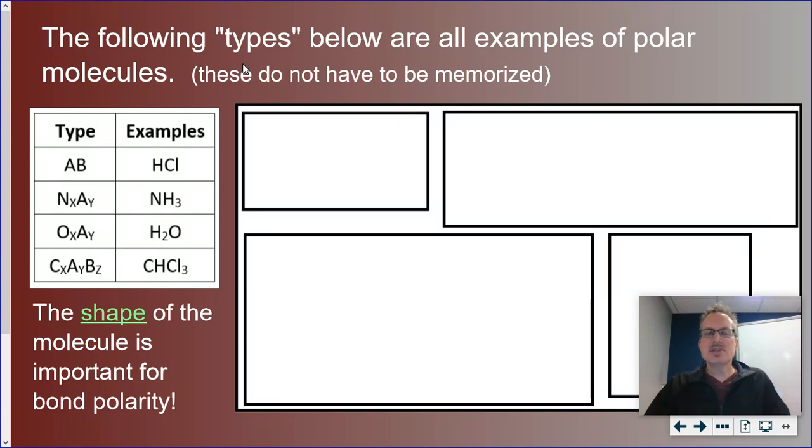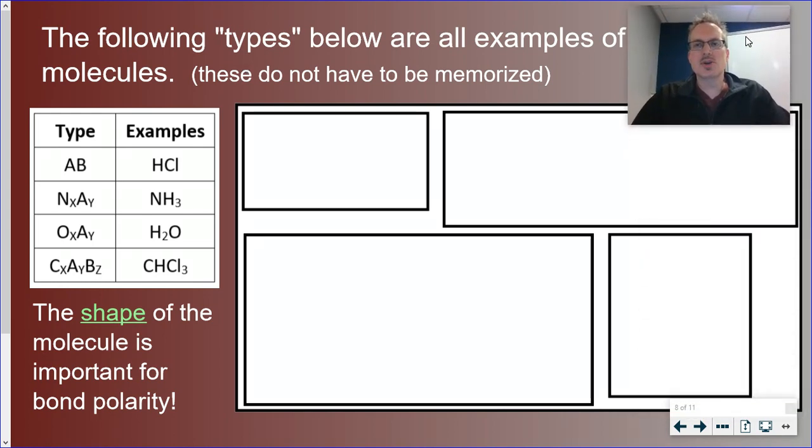What I'm going to use these for is to pull each of those four examples onto the page, draw it for you, show you how come it is polar, and how these individual bond dipoles actually can add together so we can see that there is some polarity. So I'm going to start with the first example. We've done this one already, HCl.